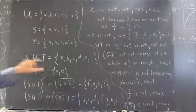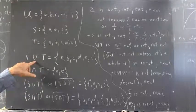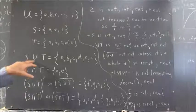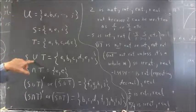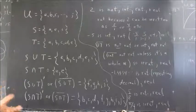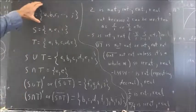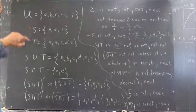then S union T—there's some ambiguity between the U here and the U up here, but the U here stands for union—is a set of elements that are in S or in T. A set of the elements of the universal set that are in S or in T.